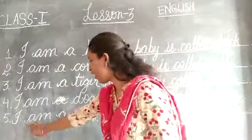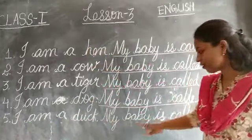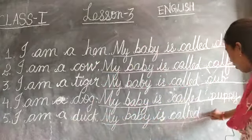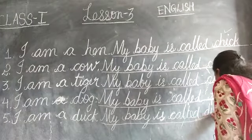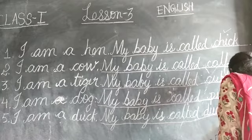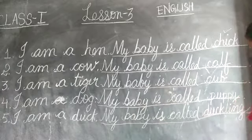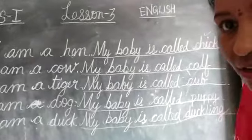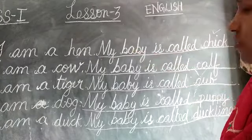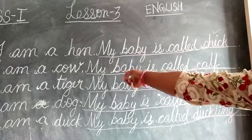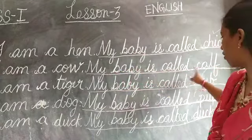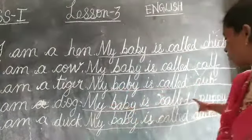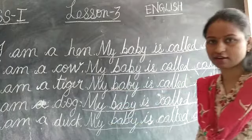Next one — last one — I am a duck. My baby — B-A-B-Y — you have to write this whole sentence: my baby is called duckling — D-U-C-K-L-I-N-G, duckling. Okay children. So what you have to write: my baby is called chick — already written. My baby is called calf, my baby is called cub, my baby is called puppy, my baby is called duckling.